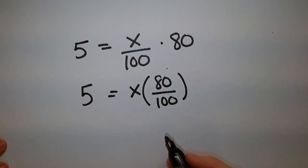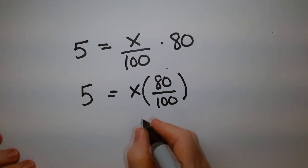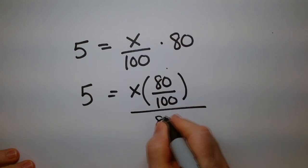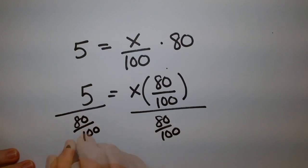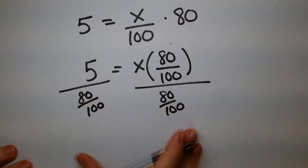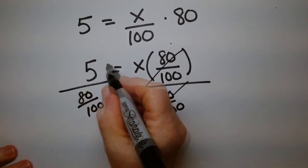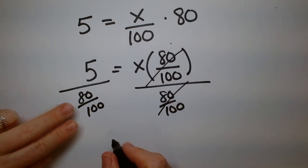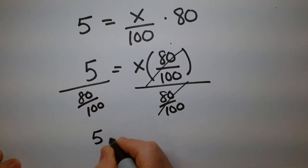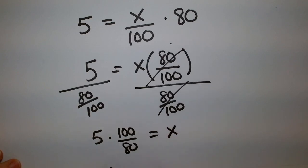And then I'm going to divide by whatever is in front of the X. And in this case, it's going to be 80 over 100 and 80 over 100. And then that will cancel this out. And then it winds up over here. So to bring something from downstairs to upstairs, you flip it. So this is 5 times 100 over 80 equals X. And then you see we got the same thing.